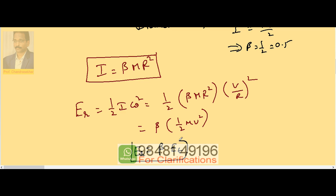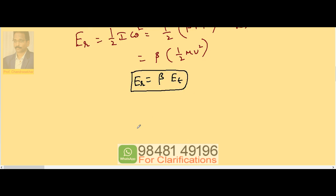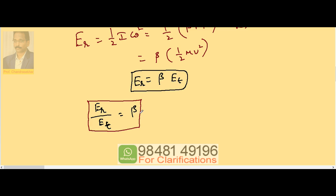So whenever a body is taken, the ratio between rotational and translational kinetic energies, Er by Et, is equal to beta. Beta is called the shape constant and depends on the given object.